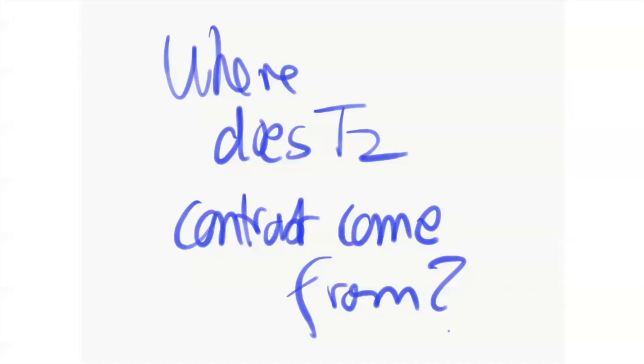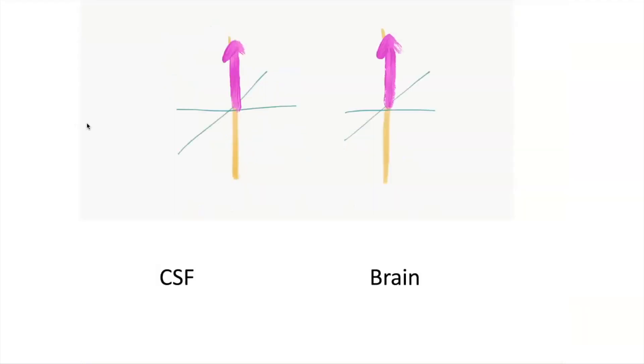In today's talk, I want to discuss where T2 contrast comes from on MR imaging. This is something I think we take for granted on the images, but if you can understand the source of the contrast, you'll have a better appreciation for how things can go wrong. I'm going to use some of the concepts I used last week, the rotating frame of reference and the idea of looking at net magnetization of the protons.